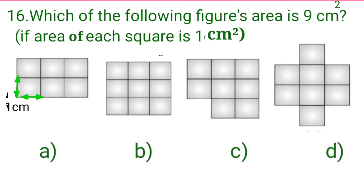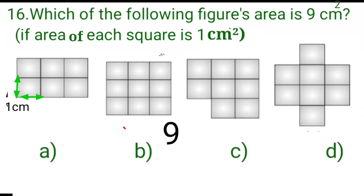In figure given in option A, it has 1, 2, 3, 4, 5 and 6 squares. So this is not the right answer. Next, in figure given in option B, let's count the squares in it. It's 1, 2, 3, 4, 5, 6, 7, 8 and 9. So how many squares are there? Yes, 9. So its area is 9 square centimetre, which is the required answer.